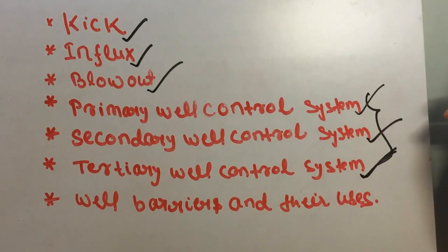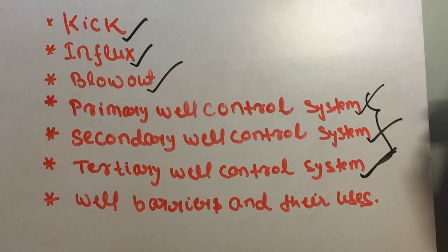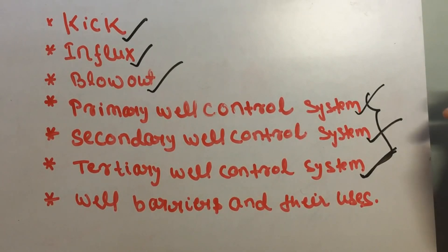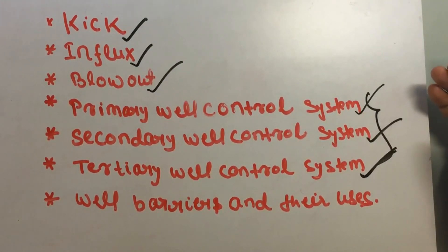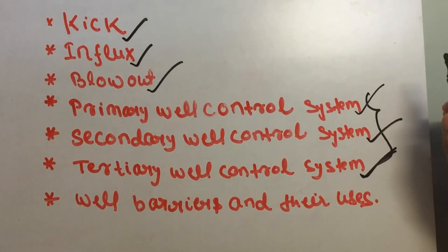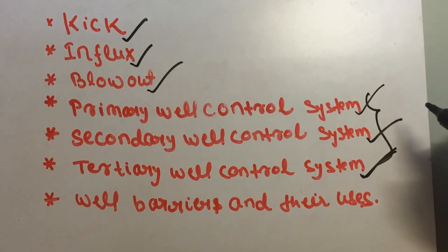Components that serve as well barriers include: drilling fluid, casing and cement, drill string, BOPs — double ram BOP and annular BOP — wellhead, tubing plug, production packer, tubing hanger, FOSB (full-opening safety valve), and IBOP (inside BOP). All these are well barriers used to prevent flow from the well.